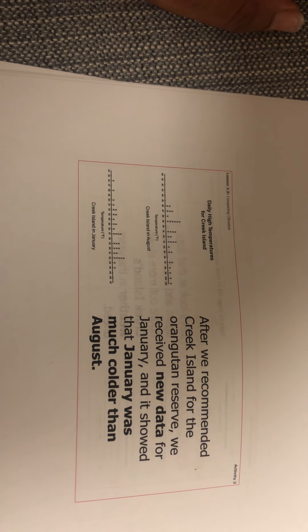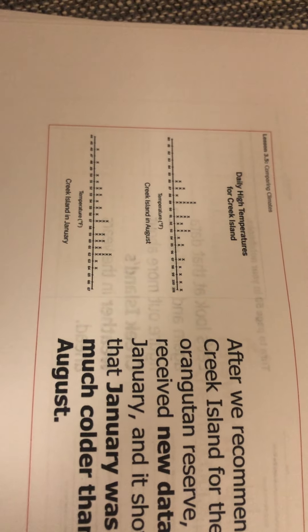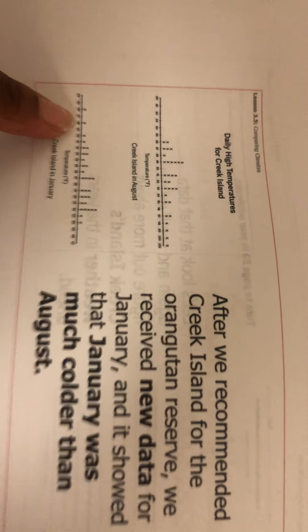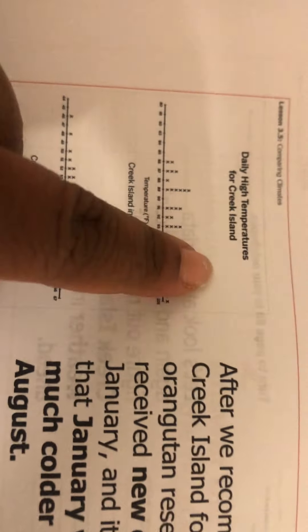After we recommended Creek Island for the Orangutan Reserve, we received new data for January. It showed that January was much colder than August, and we can see that here on this slide — January has more markings of colder temperature than in August. The next task is on page 50, also attached to your PowerPoint slide at the very end. Look at the data again and see if we can figure out more about Creek Island's weather in the years ahead — look at the diagram and answer those questions.